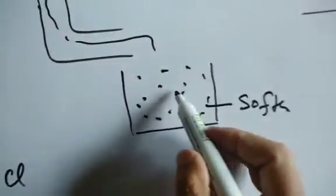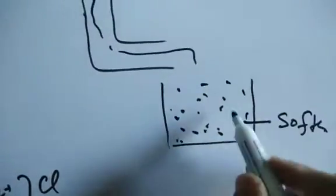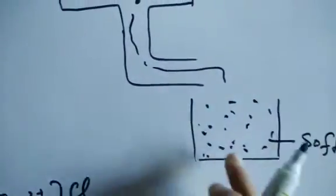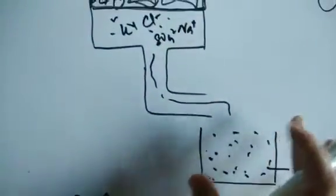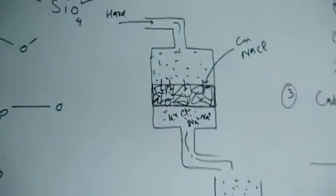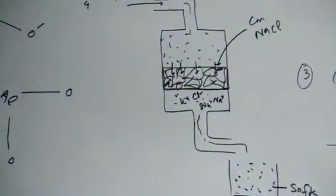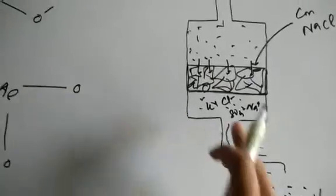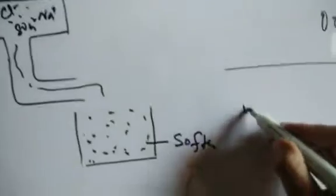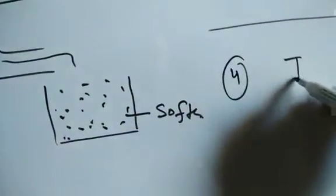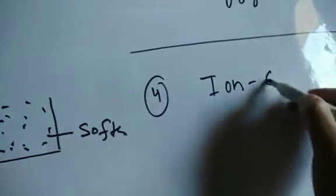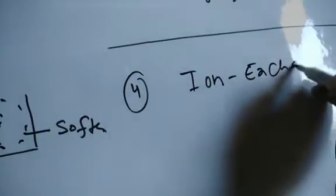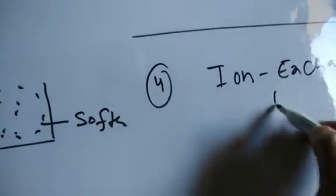Note that this process cannot be called de-mineralization or de-ionization, because anions like chloride, sulfate, and bicarbonate are still present in the treated water. This process is specifically called softening of water, as only hardness-causing cations are removed.